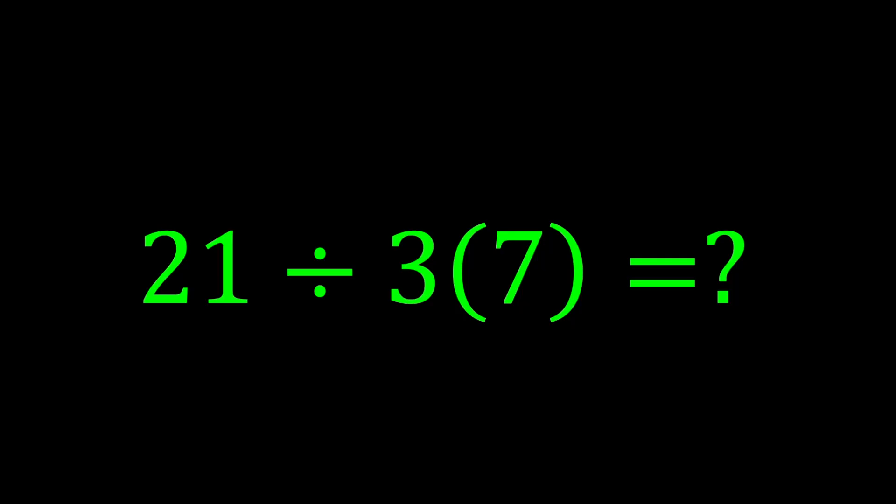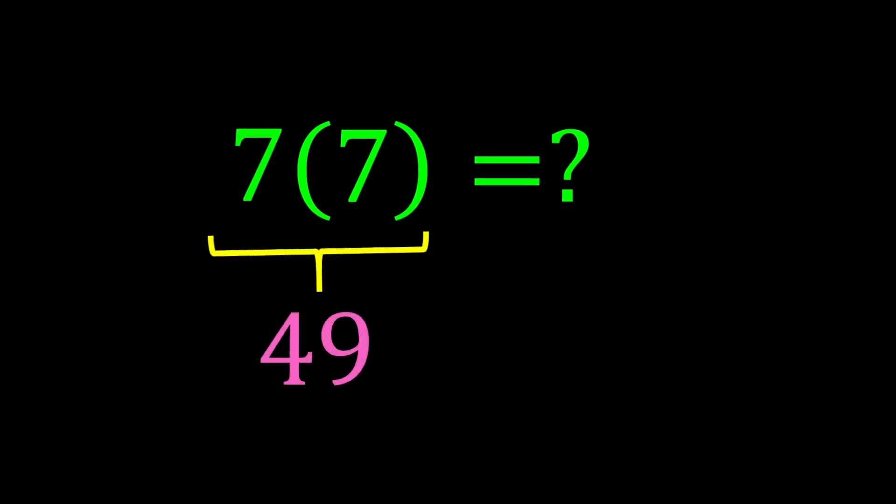Therefore, in this expression, if we move from left to right we first reach division. 21 divided by 3 gives us 7. Finally, 7 multiplied by 7 gives us 49.